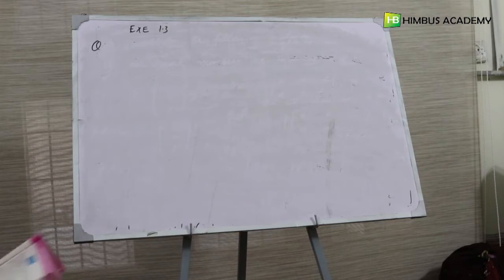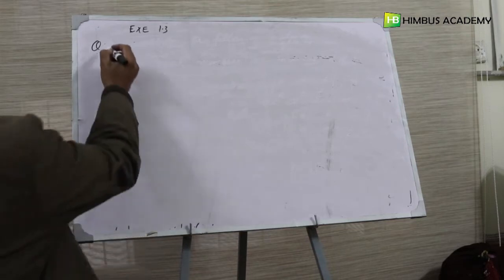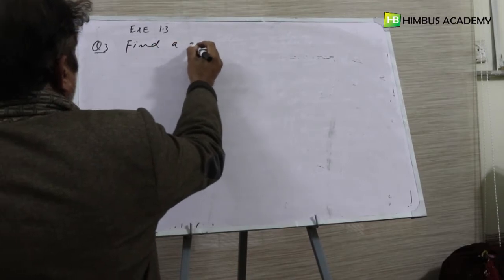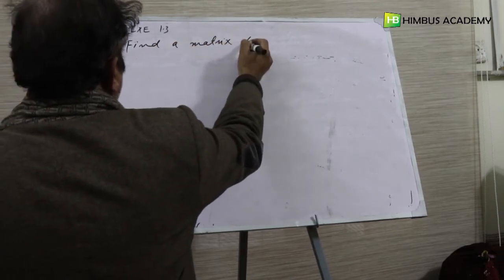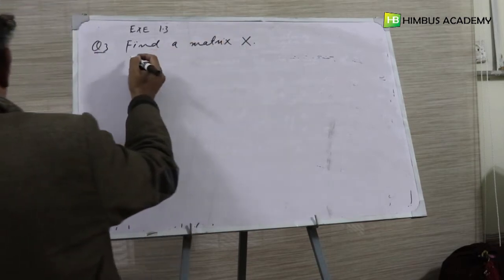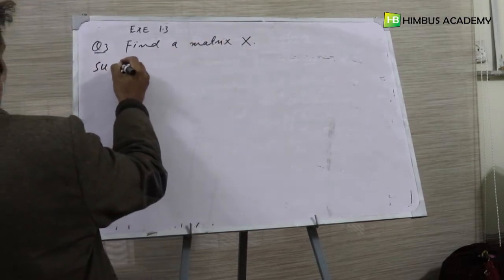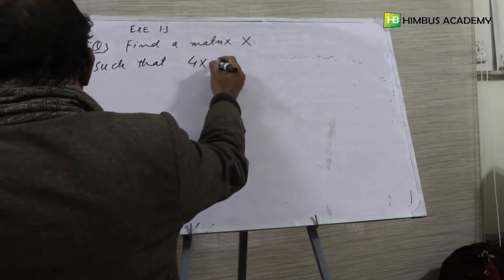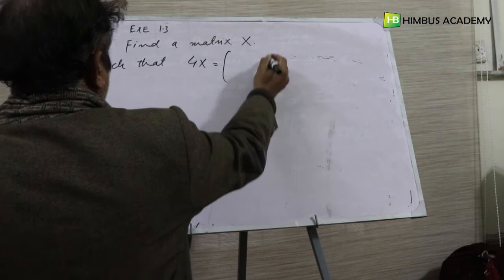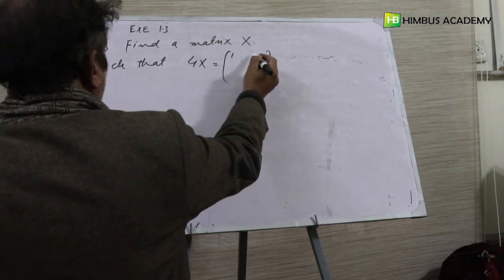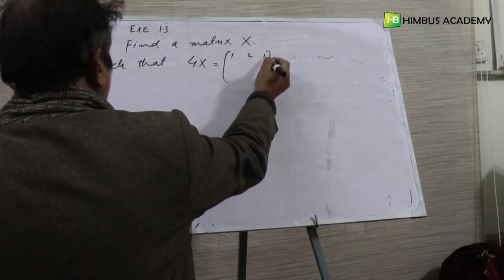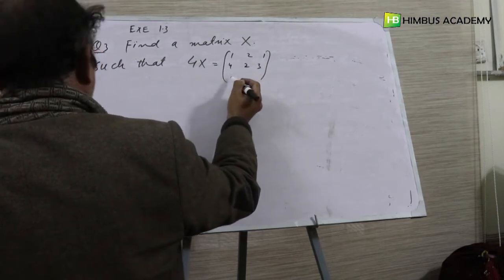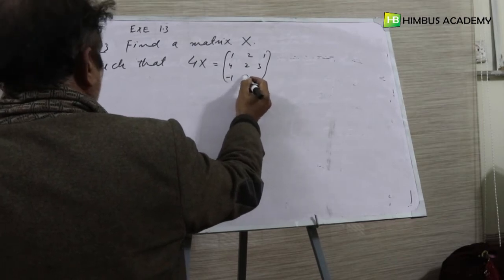Okay, find a matrix X, question number 3. Find a matrix X such that 4X is equal to 1, 1, 2, 1, 4, 2, 3, minus 1, 9, 7.